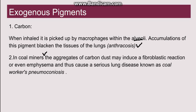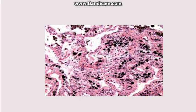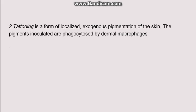In cases of coal miners, sometimes there are aggregates of carbon deposition, and these aggregates can lead to a fibroblastic reaction and even emphysema, causing a serious lung disease known as coal worker's pneumoconiosis. Carbon is black in color, and as we can see in this picture, it is deposited in the alveoli with a very characteristic black color.